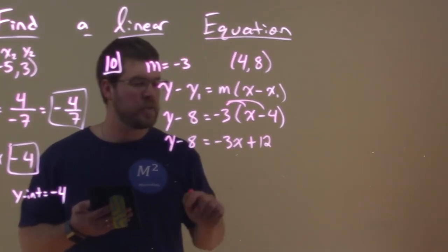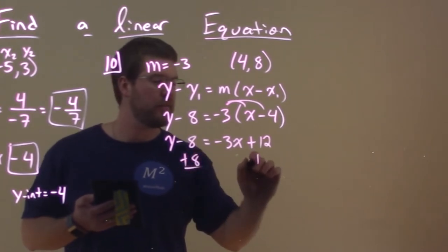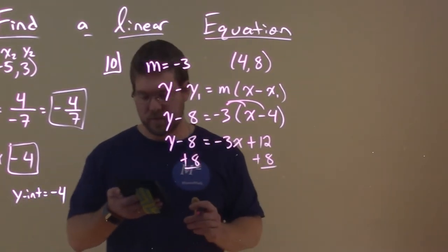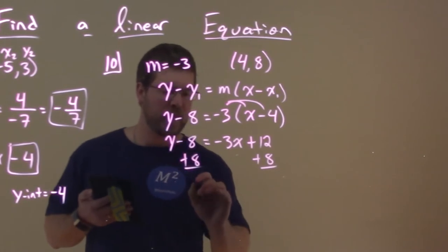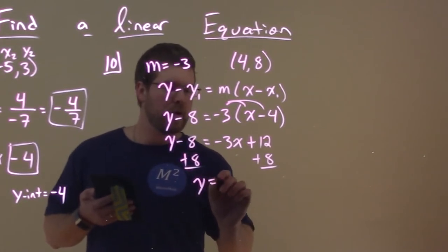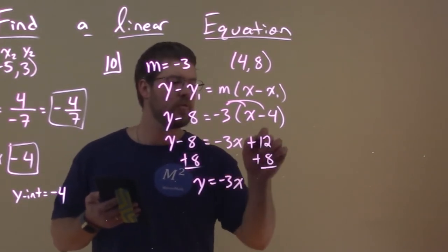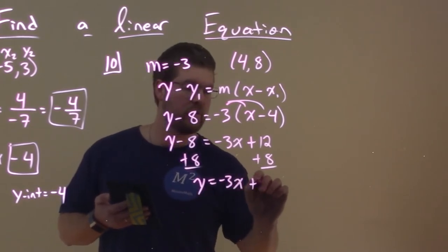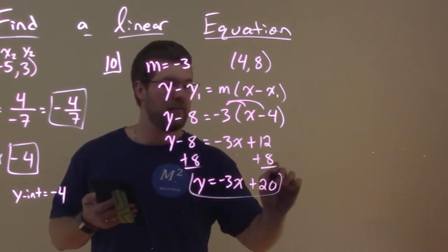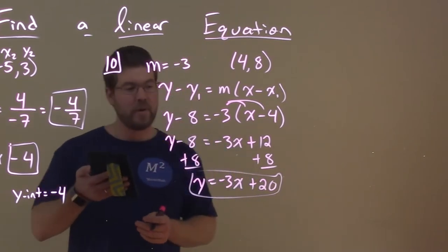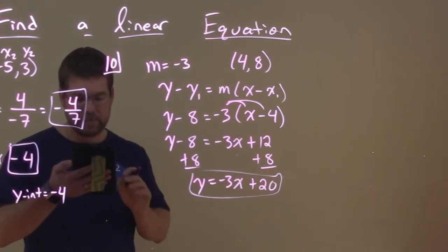We want to bring the 8 over to the right, so we add an 8 to both sides. And hopefully you can see this is shaping up to be a good slope-intercept form. Y equals negative 3X, and then 12 plus 8 is 20. And there we have our slope-intercept form, Y equals negative 3X plus 20.